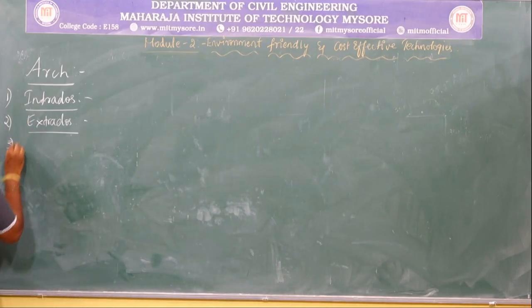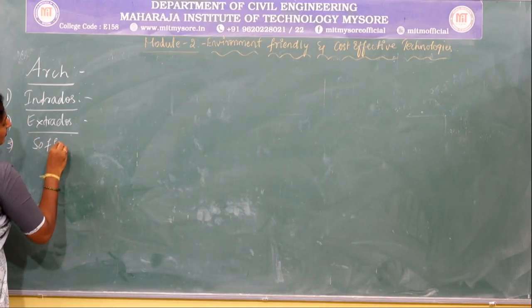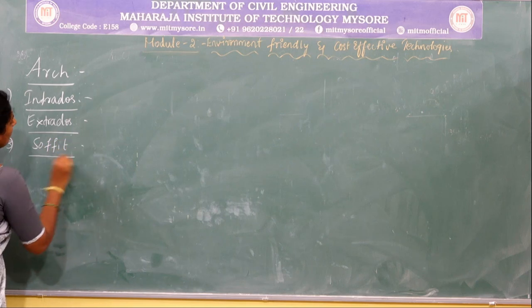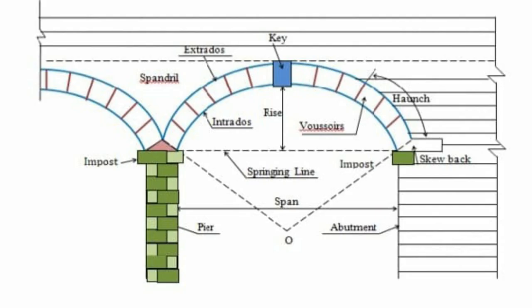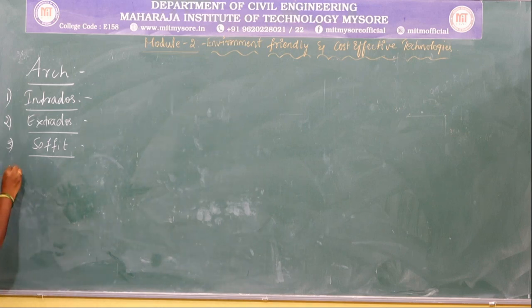The next element is soffit. Soffit is the inner surface of an arch. Basically intrados and soffit can be defined as the same. The next element is voussoirs.